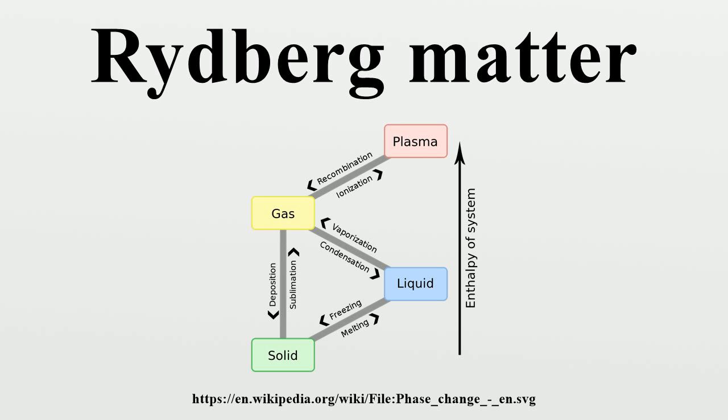Like bosons that can be condensed to form Bose-Einstein condensates, Rydberg matter can be condensed, but not in the same way as bosons. The reason for this is that Rydberg matter behaves similarly to a gas, meaning that it cannot be condensed without removing the condensation energy. Ionization occurs if this is not done.